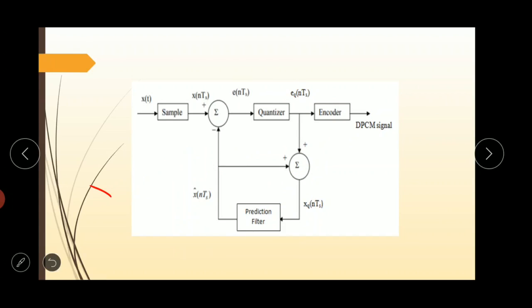The predicted value is produced by using a prediction filter. The prediction value is produced by this prediction filter. Here the quantized signal is denoted as EQ of NTS. Here we can see a quantizer is used. So at the output of the quantizer, we get our quantized signal. The quantized signal is denoted as EQ of NTS.